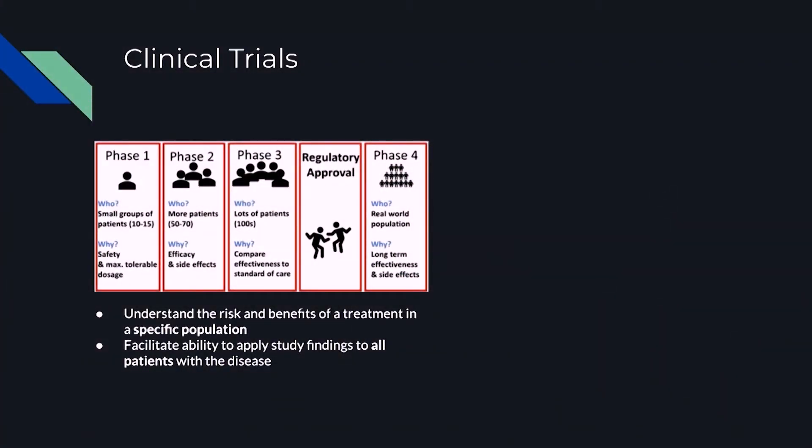This is a collaboration with Genentech. Before I go into what is optimization for clinical trials, I'll first give a short overview about clinical trials and related information. Most people are quite familiar with the process. Basically at each phase we select a cohort of patients and do certain studies, and from that we try to understand the risk and benefits of a treatment for that specific population, hoping to apply the findings to all patients in the real world.